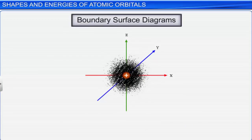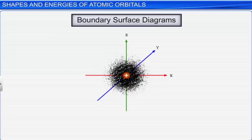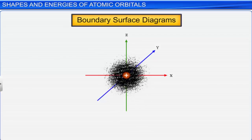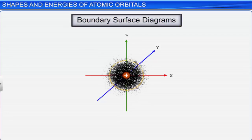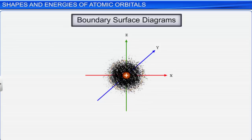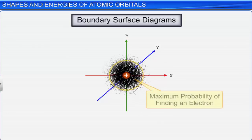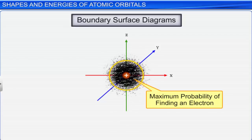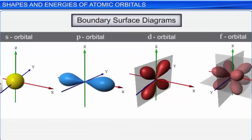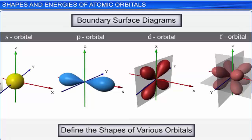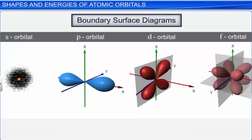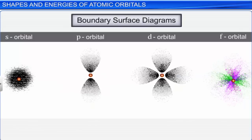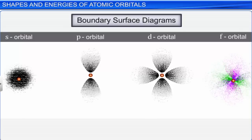The probability of finding an electron in a particular direction or angle is called angular probability distribution, which can be depicted by boundary surface diagrams. The boundary is drawn where the probability density remains fairly constant. The region inside the boundary surface depicts the orbital where the probability of finding an electron is maximum — that is, about 90%. The boundary surface diagrams define the shapes of various orbitals. Therefore, the shape of the electron cloud density and that of the boundary surface determines the shape of the orbital.